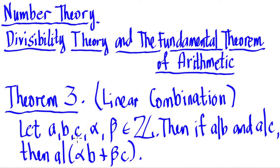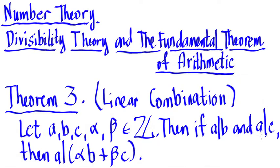Let A, B, C, alpha, and beta be integers. Then if A divides B and A divides C, then A divides the quantity alpha B plus beta C. Again, if A divides B and A divides C, then A divides the quantity alpha B plus beta C.